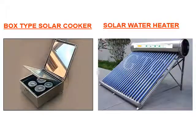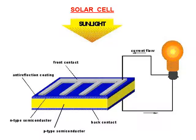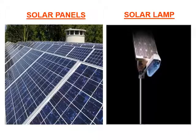You can see the box type solar cooker, solar water heater, solar cell, and series of solar cells connected to make solar panels. This is also a solar lamp.